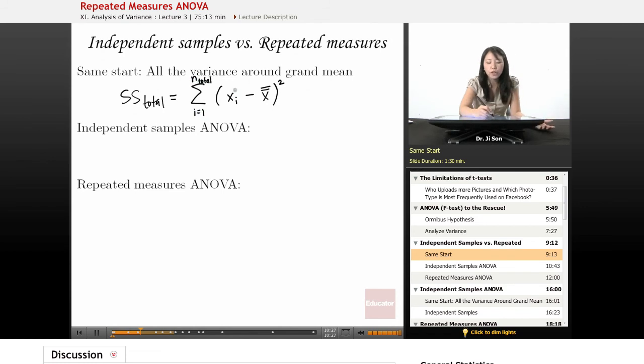So this is going to go through every single data point in every single sample, and subtract, get the distance from the grand mean, and then square that distance, and then add those distances all up, squared distances all up. Okay, so that's the same idea to begin with. Now we're going to take this SS total and break it down into its component parts.